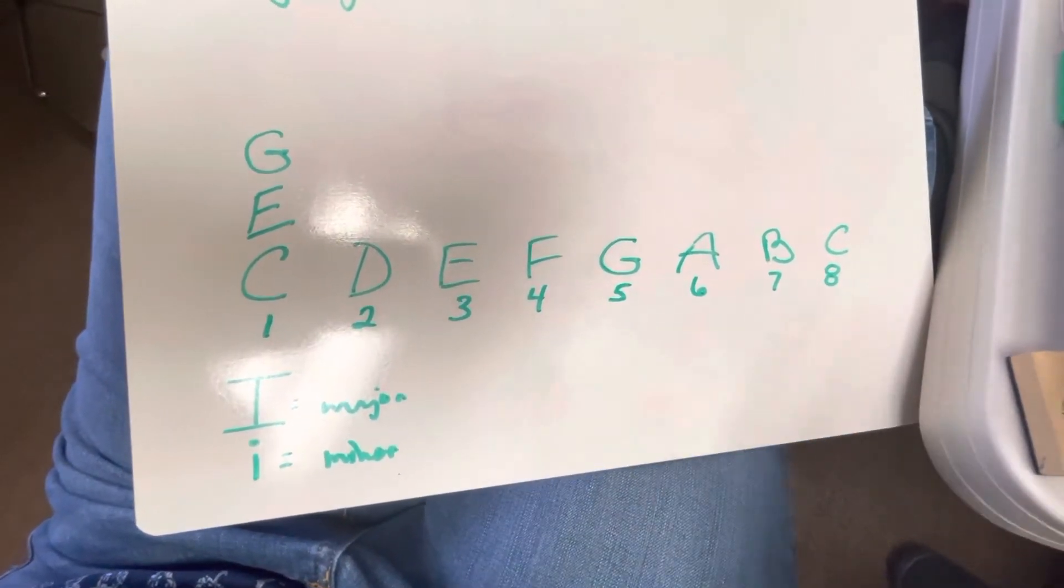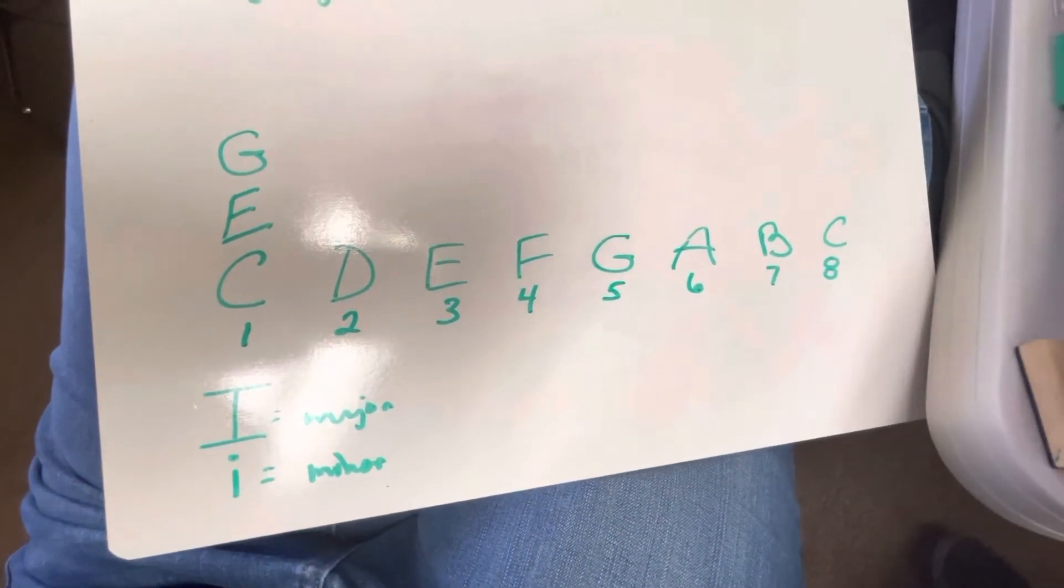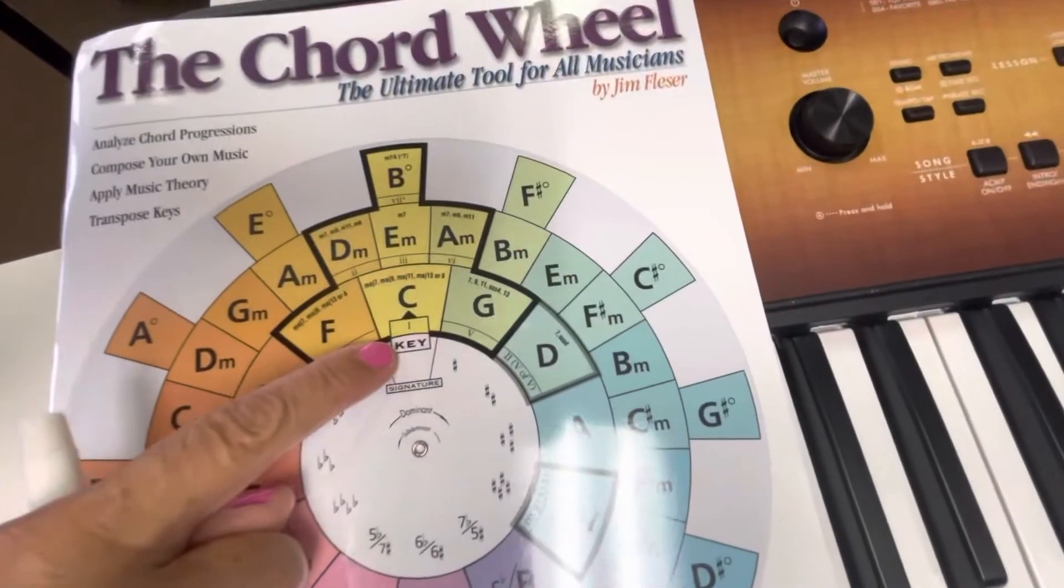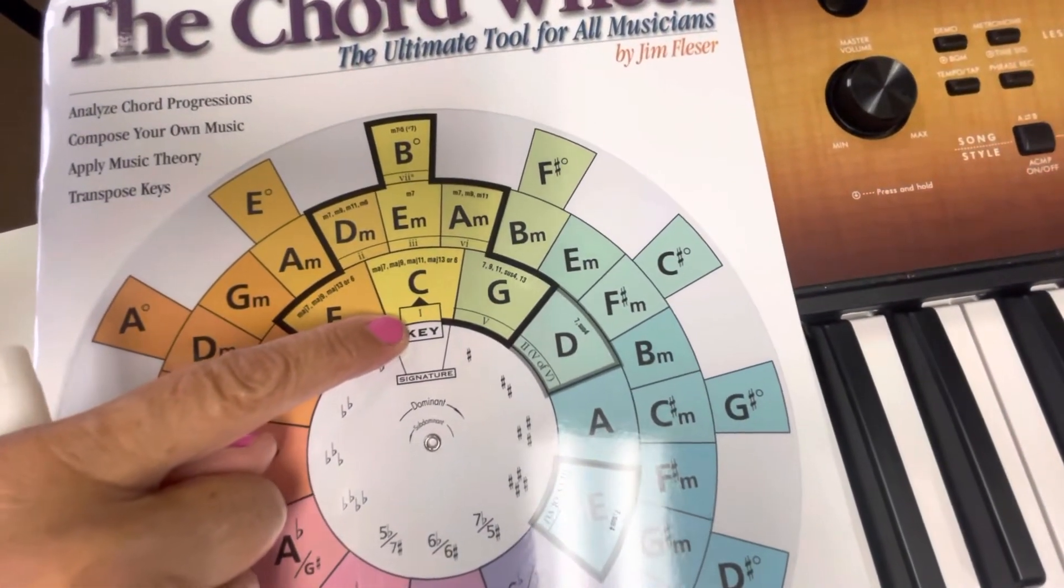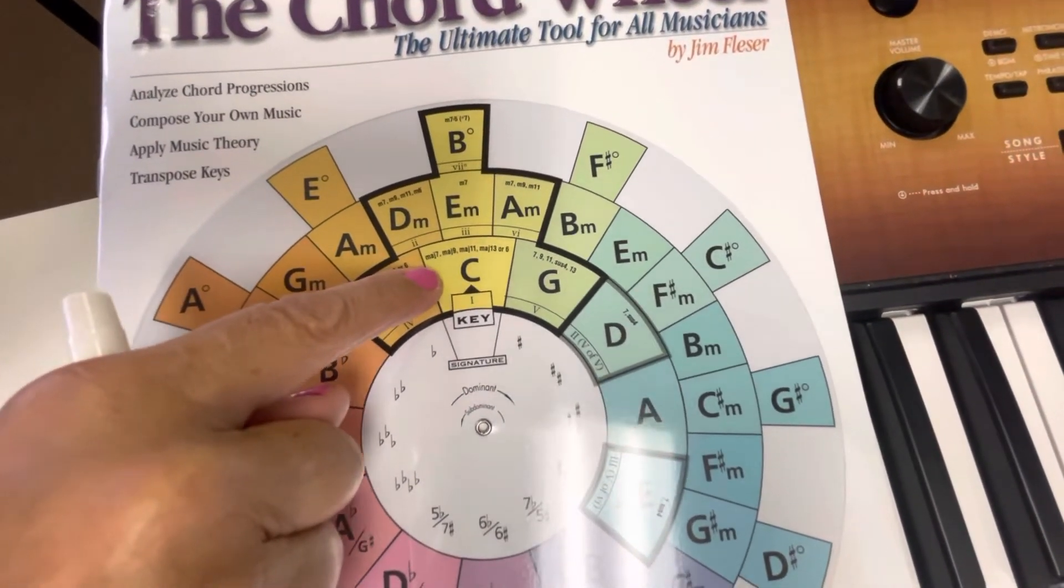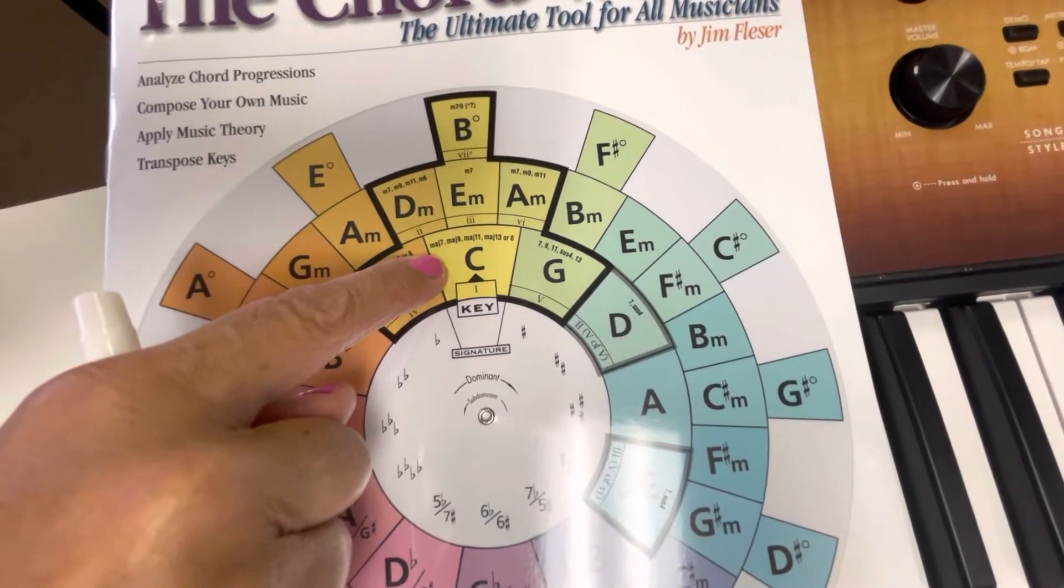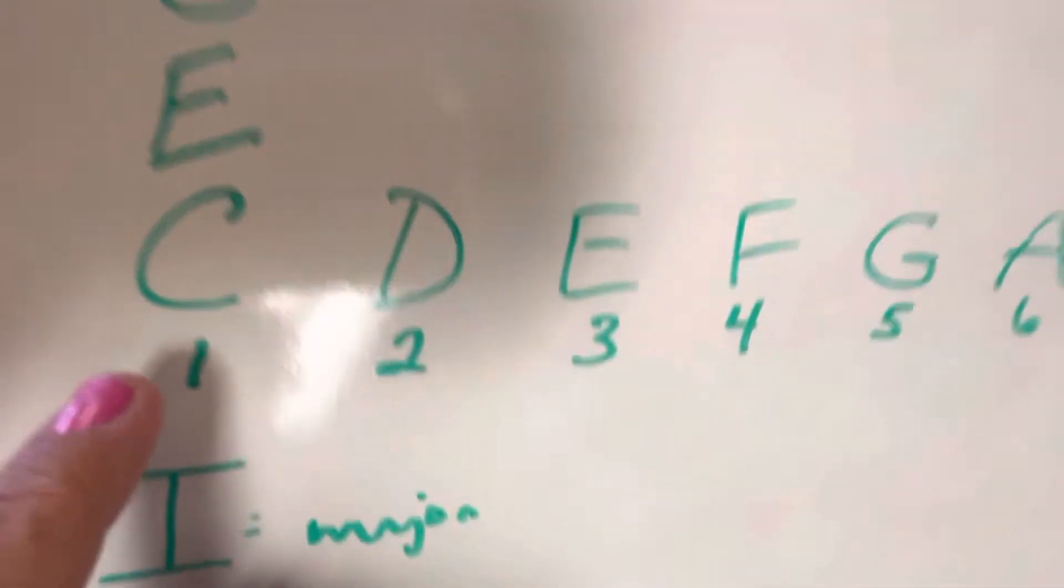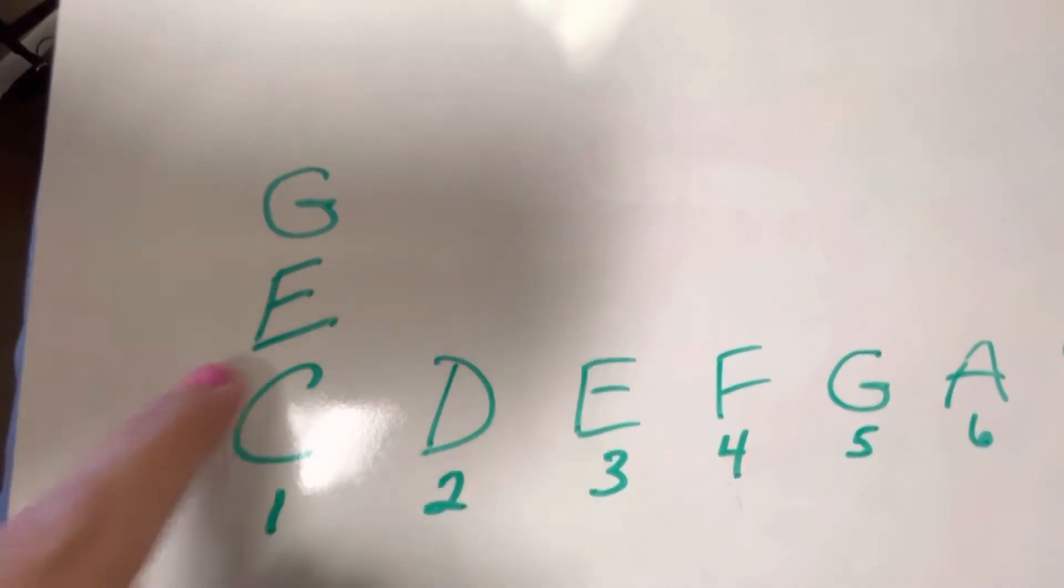Now, look on the chord wheel. What is in this tiny little box? One. A capital one. Because that C says that C chord, you have to know what's inside of that C chord. That C is this C, which really means C-E-G.